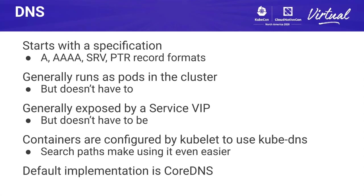Another way of doing service discovery is DNS. DNS starts with a specification describing A records, quad-A records, SRV, and PTR records. This generally runs as a service implemented using pods inside the cluster, but it doesn't have to — anything that matches the DNS specification can serve as Kubernetes DNS. The containers are configured by kubelet to use kube DNS or the provider of kube DNS as their DNS provider. Currently the default implementation is CoreDNS, which lots of people run as a service inside their cluster.